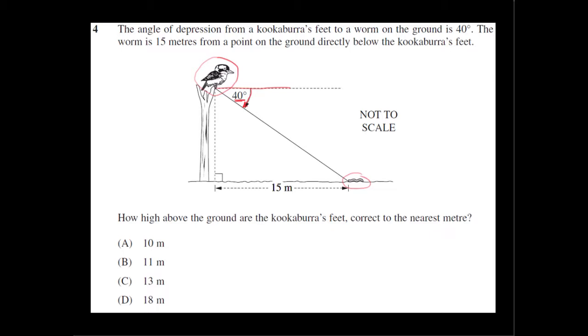The worm is 15 meters from a point on the ground directly below the kookaburra's feet, so if you look directly below the kookaburra's feet, that's here. From here to here, it's 15 meters.